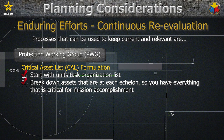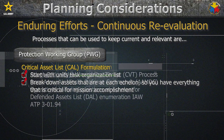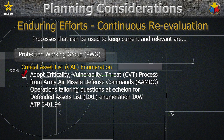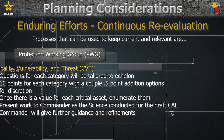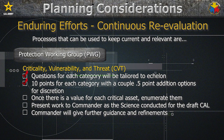Break down assets at each echelon so you have everything that is critical for mission accomplishment. You can adopt the Criticality, Vulnerability, Threat — or CVT — process conducted by the Army Air Missile Defense Commands to assist the Joint Forces Commander with developing the DETER-CAL. The CVT metric can be found in ATP 3-01.94. Questions for each category will have to be tailored to your echelon. There should be 10 points total for each category with a couple of 0.5 addition options at your discretion. Once you value each critical asset, you can enumerate them and present this work to your commander as the science behind the process. The commander will then give further guidance and refinements.